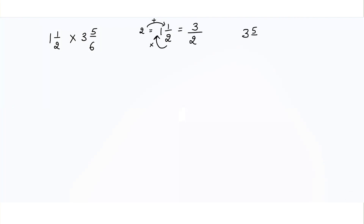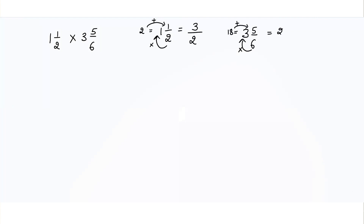For 3 and 5/6, we do the same. We multiply 6 with 3 to get 18, then we do 18 plus 5 which equals 23. So we write 23 over 6.